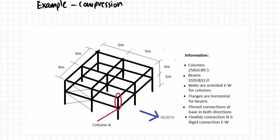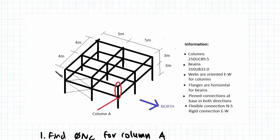In this example, we're given a frame such as the one shown here, and it's a steel structure. We're going to be looking at a particular column and whether it has enough design capacity. The information given is that we're using 250UC89.5 universal columns. Every single column will be 250UC89.5, and the beams we're using are 310UB32.0.